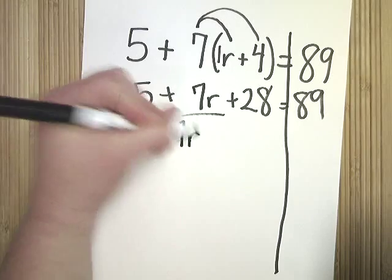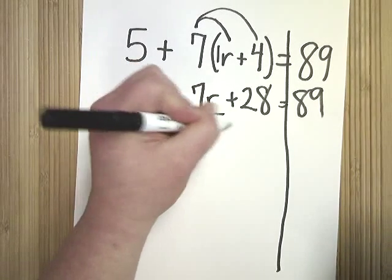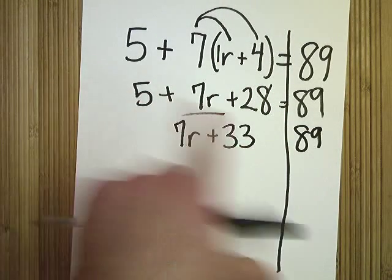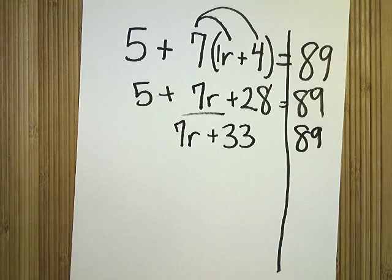So I get seven r, bringing that down. And this plus this, you'd have thirty-three. And by the way, they're on the same side of the line, so I just added them because it said to add them. Don't do fancy things if it's on the same side.